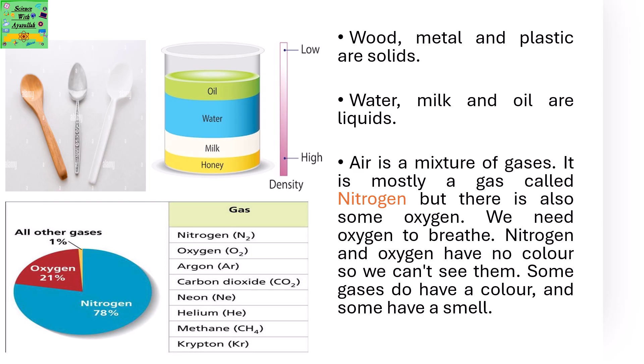Water, milk and oil are liquids. Air is a mixture of gases. It is mostly a gas called nitrogen, but there is also some oxygen. We need oxygen to breathe. Nitrogen and oxygen have no color so we can't see them. Some gases do have a color and some have a smell.